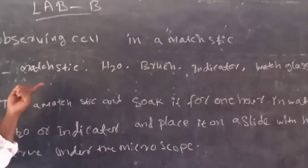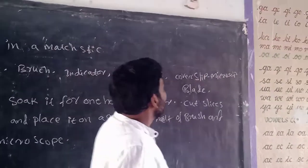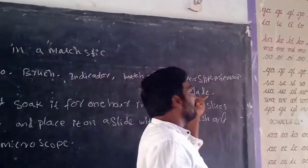So which materials are required? Okay, mastic, water, brace indicator, watch glass, cover slip, microscope, blade.